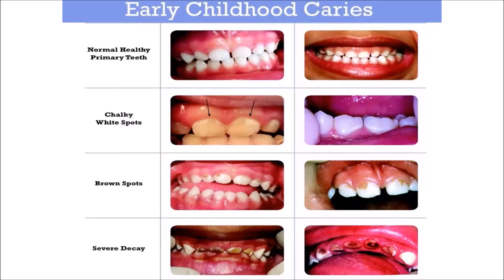You can see on the top the normal healthy primary teeth. Then you have chalky white substances on the tooth — they are hypomineralized. Hypo means less. The mineral content needed in your teeth includes calcium, phosphorus, and fluoride. Brown spots occur when these hypomineralized areas are again removed. Severe caries is when there is breakdown of the tooth structure and patients start having sensitivity, and sometimes pain.